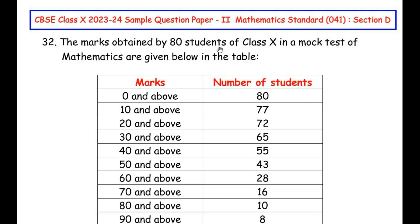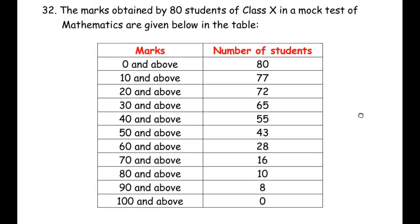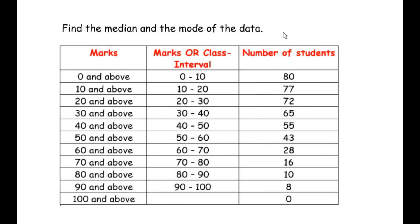The marks obtained by 80 students of class 10 in a mock test of mathematics are given in a table. We need to find the median and the mode of the data. The marks are given in the format '0 and above', '10 and above', and so on, so we need to change this data into grouped data class intervals — that will be our first step.